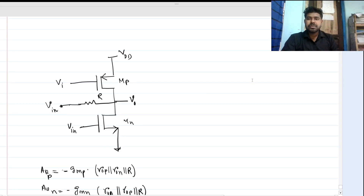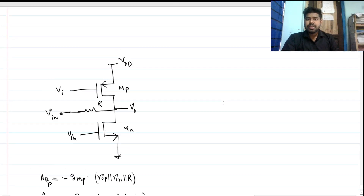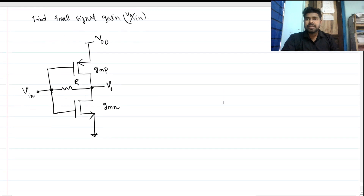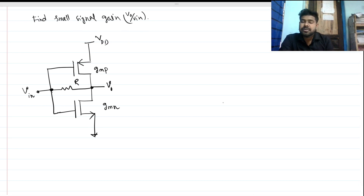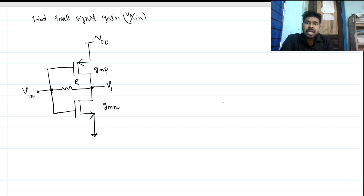Hi everyone, welcome to this session. Today we will be solving this very interesting question. We have to find the small signal gain, Vout by Vin. This is a normal inverter structure, but in this case we have a resistance from input to output. I will be solving it using two different methods.